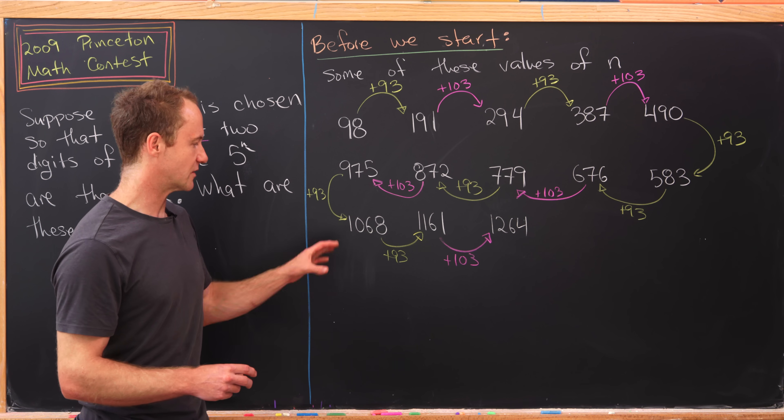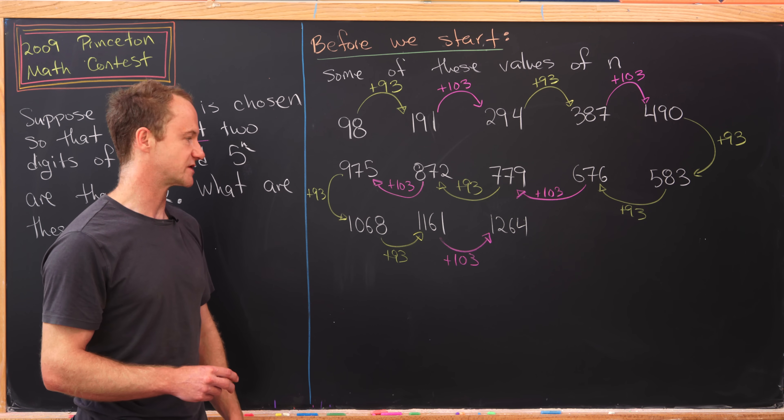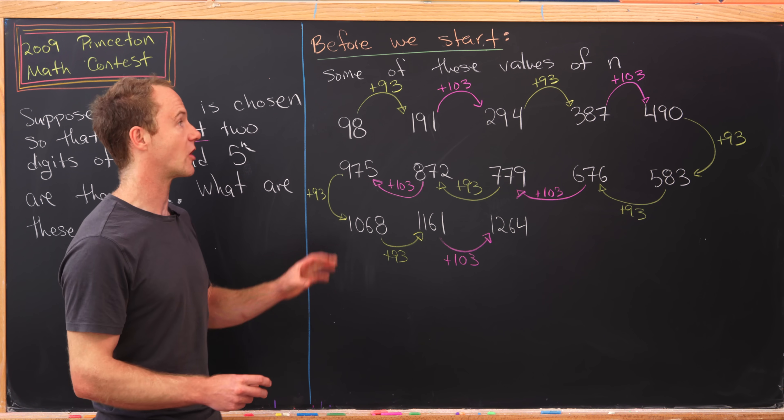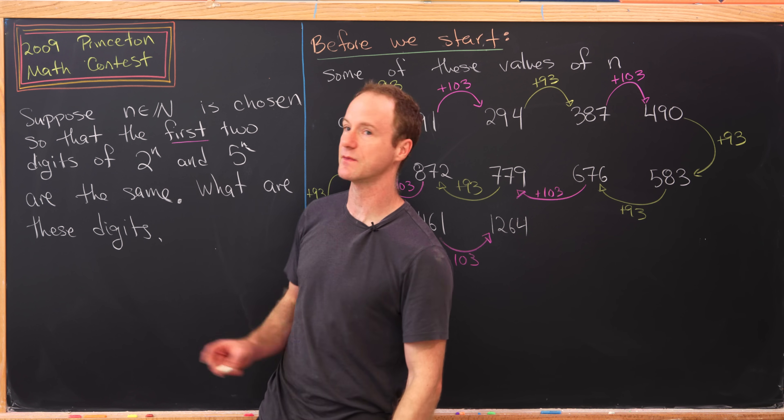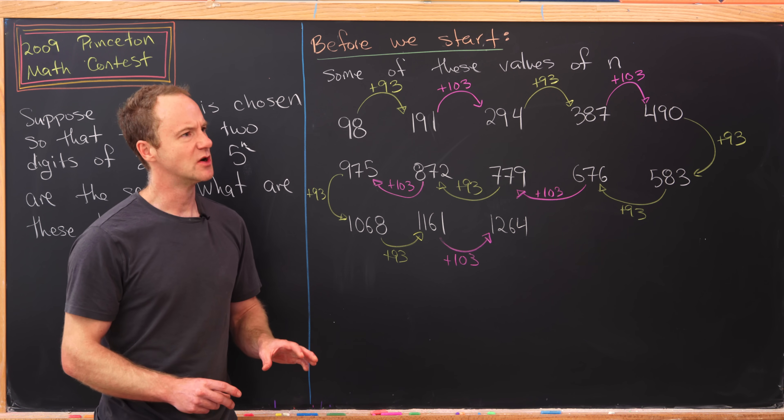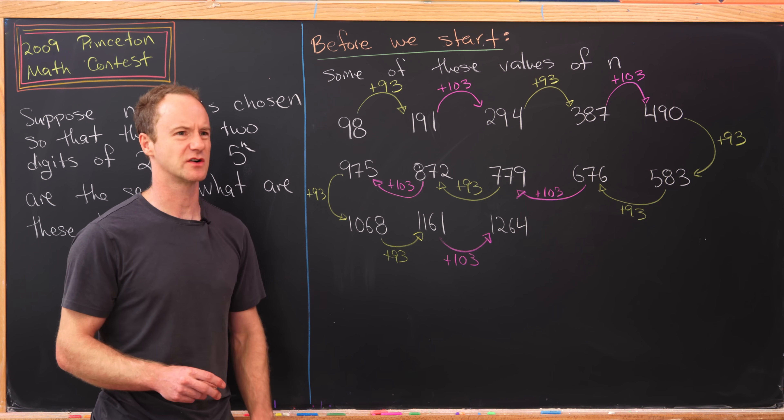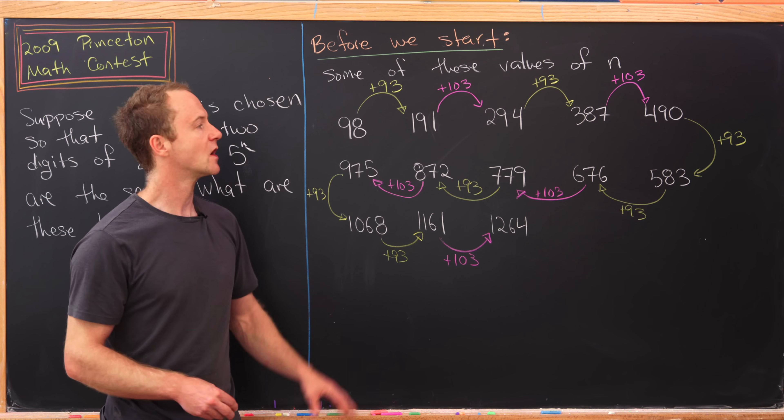I challenge you to find a nice pattern for this addition of 93 versus 103, which will allow us to write a formula for all values of n where something like this occurs. Of course proving that those are all values of n is probably pretty difficult.